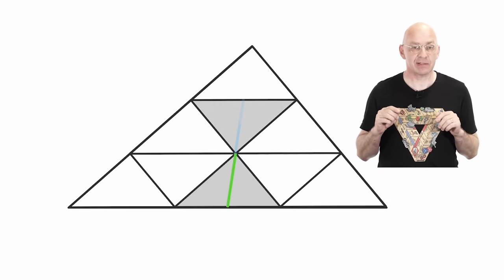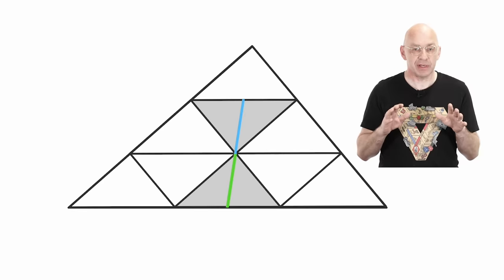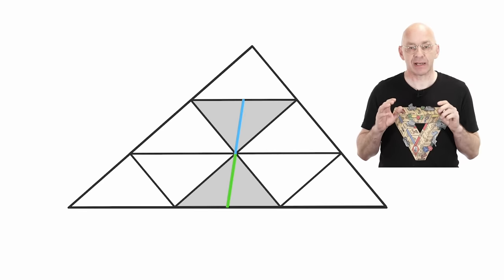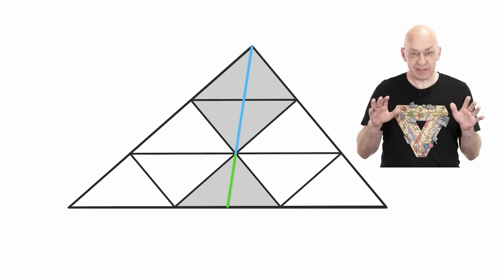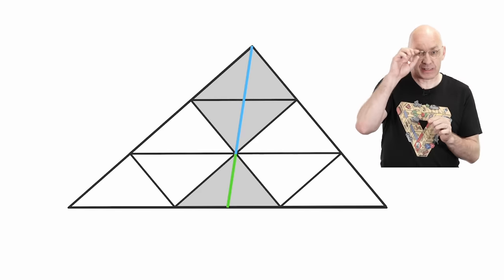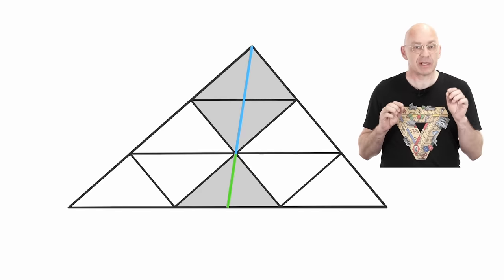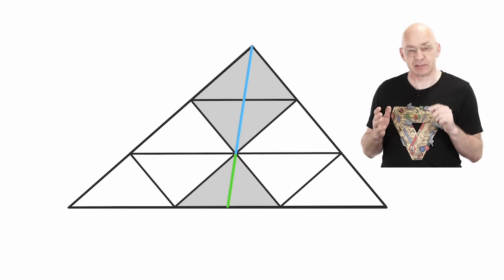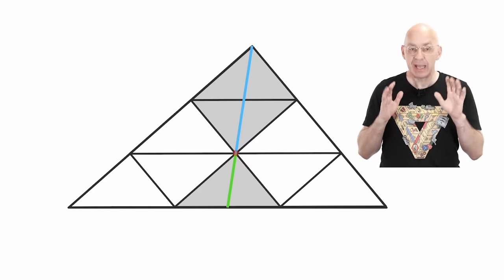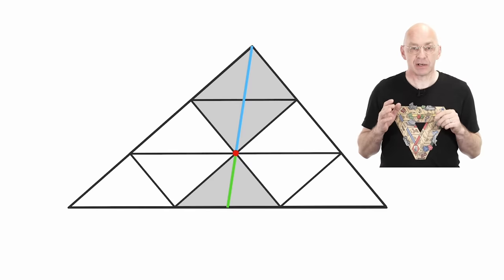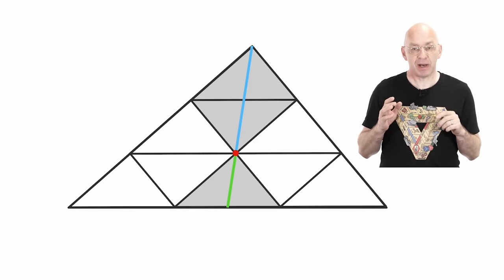There, extend. And extending further, we get the median of the little triangle at the very top. And now, of course, together, the medians of the little triangles form the median of the large triangle. And this median passes through the special point right in the middle of the tiling. And the blue part of the median is twice as long as the green part.